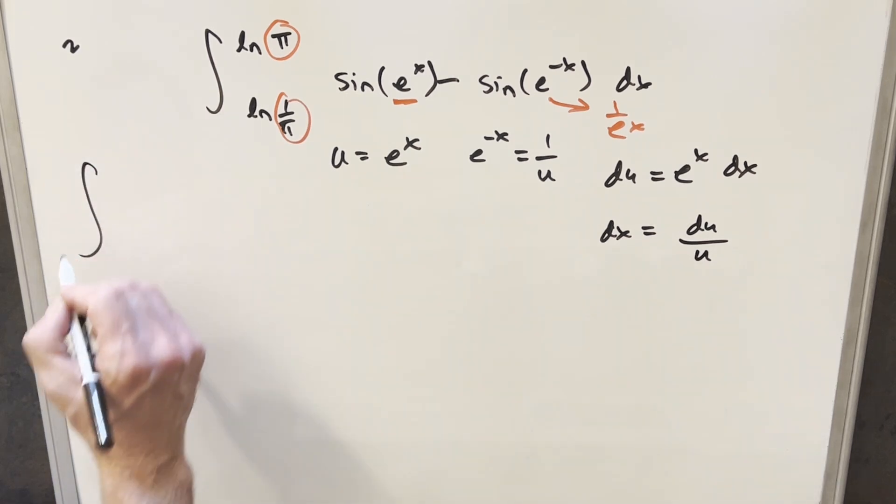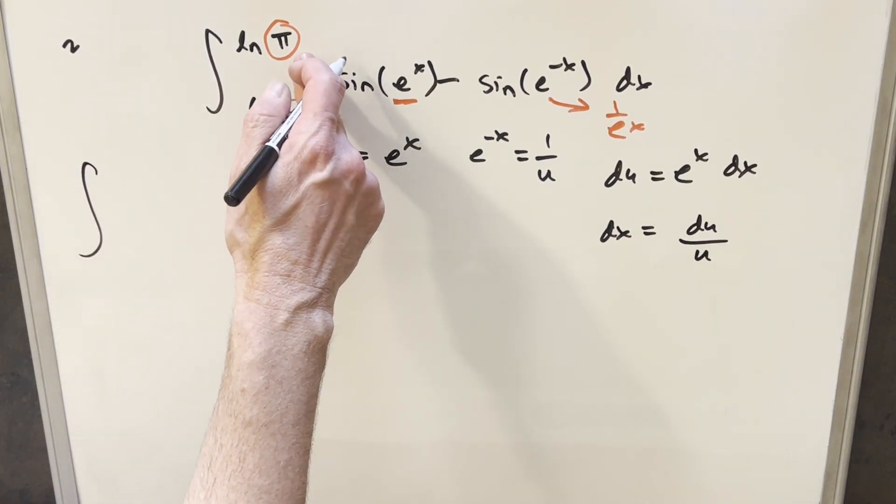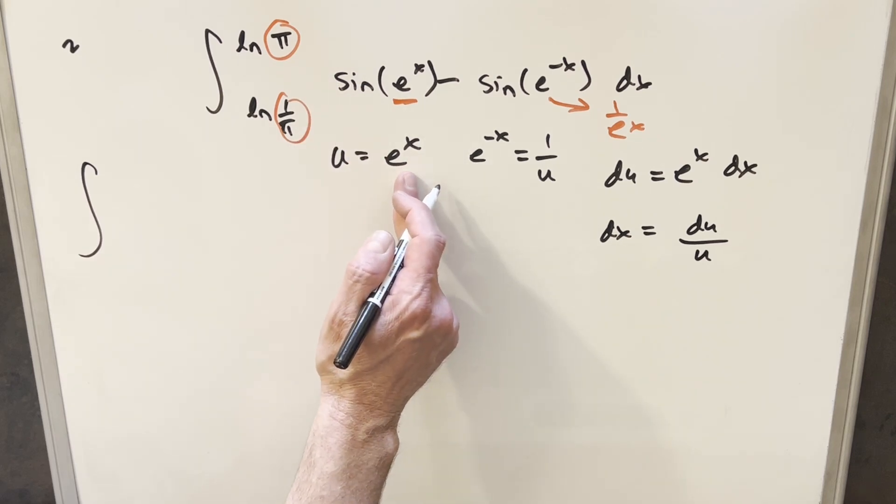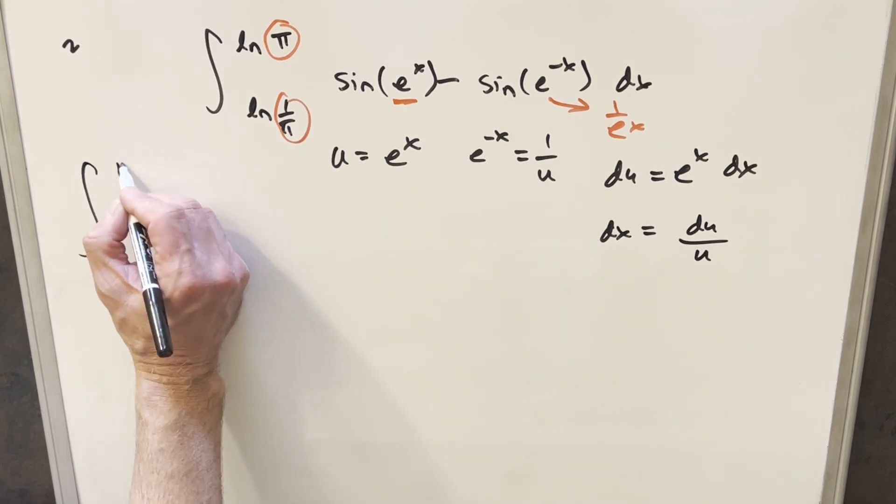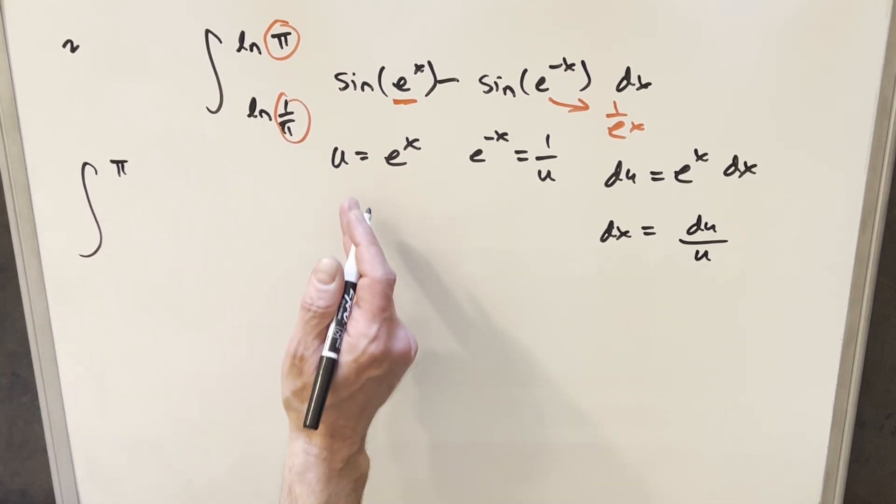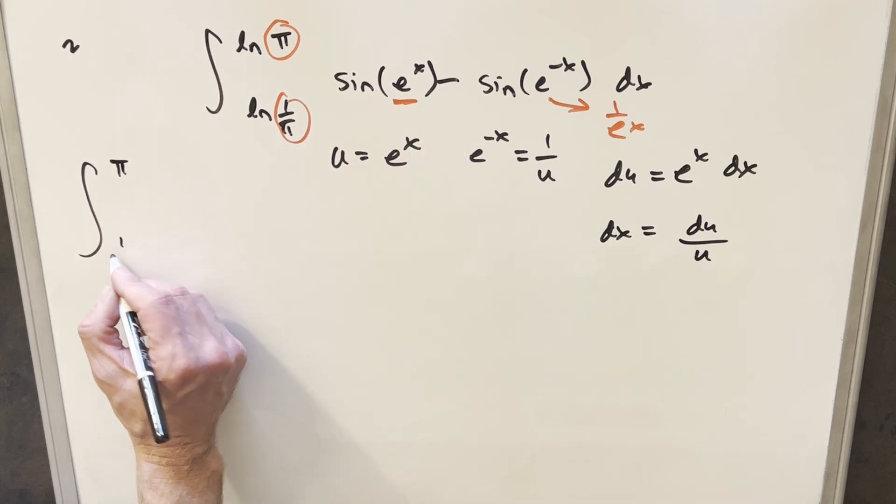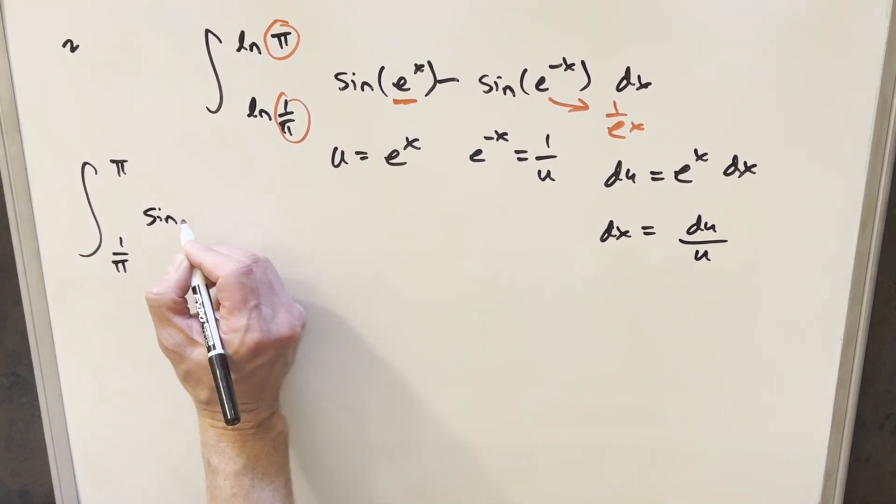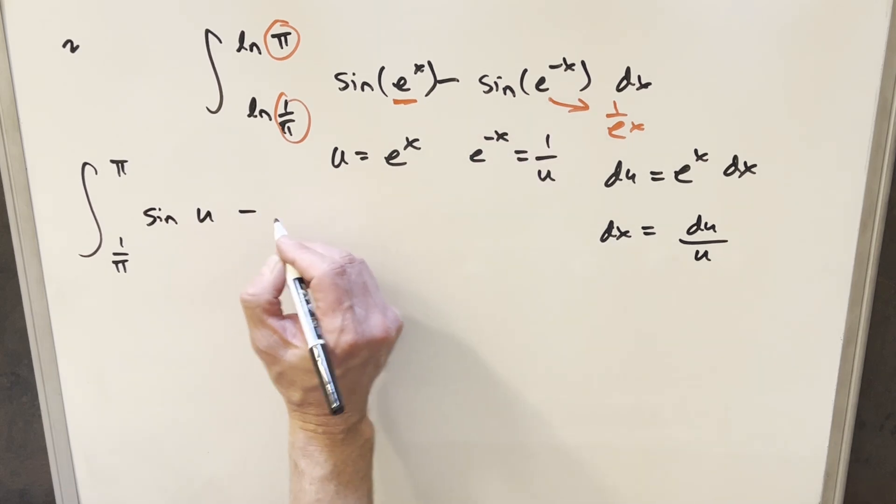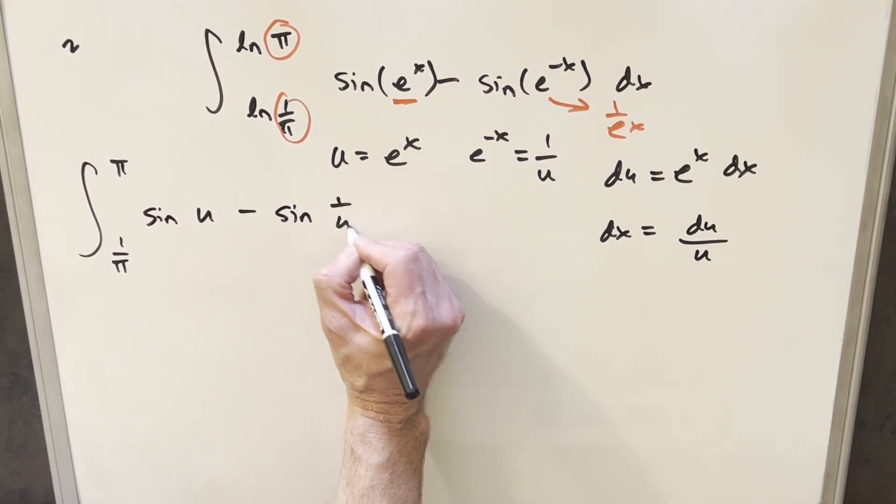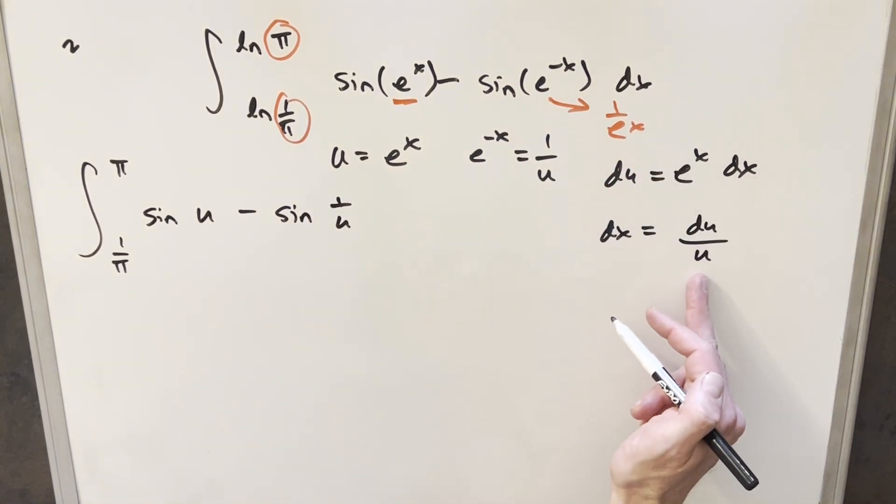And so we'll just go ahead, we'll make the substitution. So first, plugging in ln π in here, e to ln π, we're just going to π for the upper bound. e to the ln 1 over π gives me 1 over π for the lower bound. Then again here, we're going to have sine u, and this one's going to become minus sine 1 over u. And then for dx, we're going to have du over u.